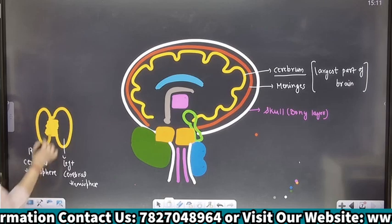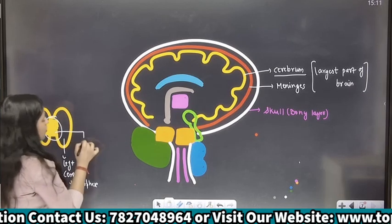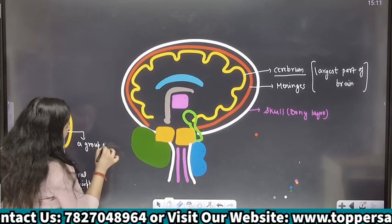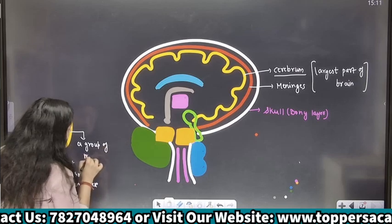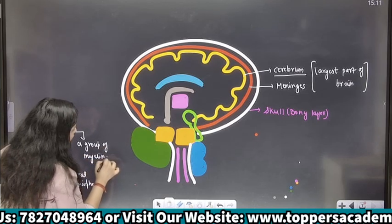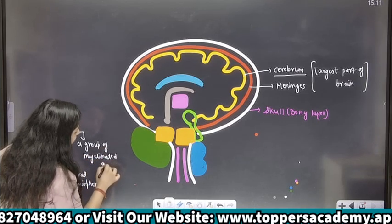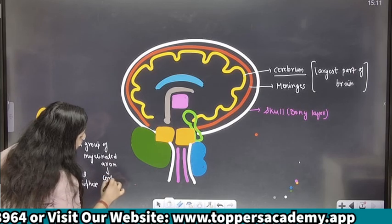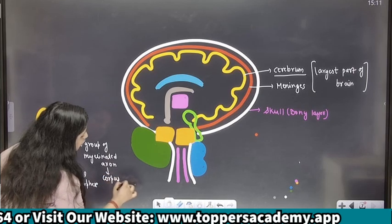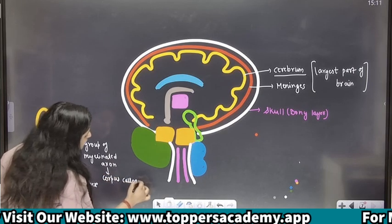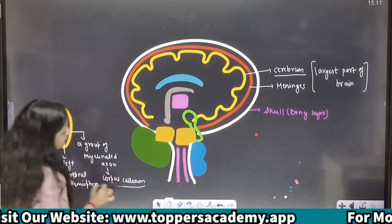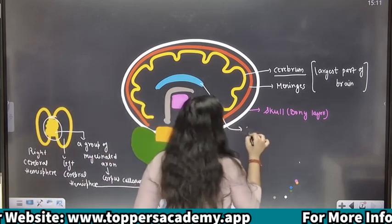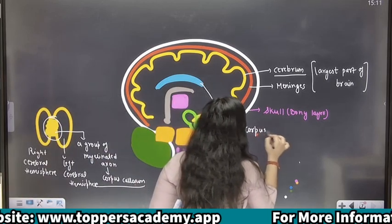Yeh aapka left cerebral hemisphere hai. Jo right aur left cerebral hemisphere hote hain, yeh dono kisse joined hain? A group of myelinated axons jisko hum corpus callosum bolte hain. This blue one — this is your corpus callosum.